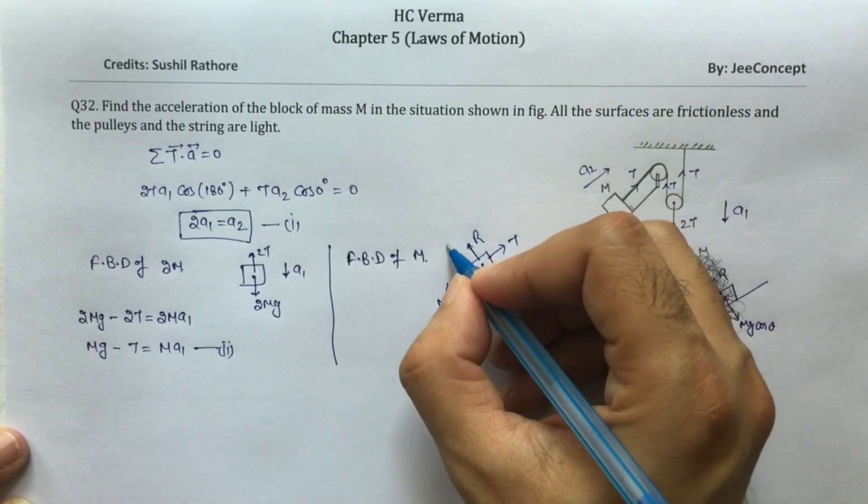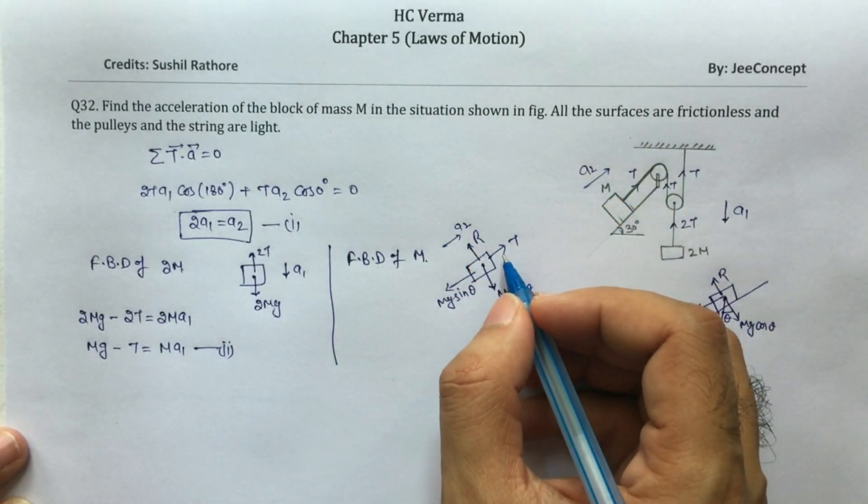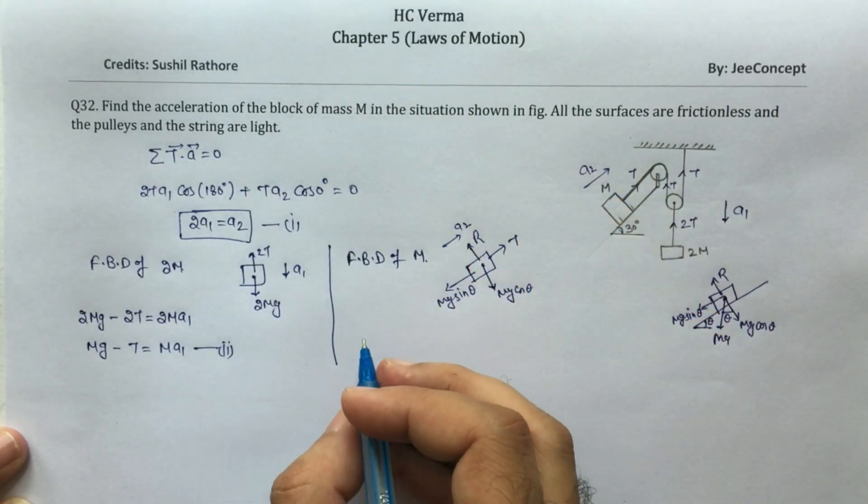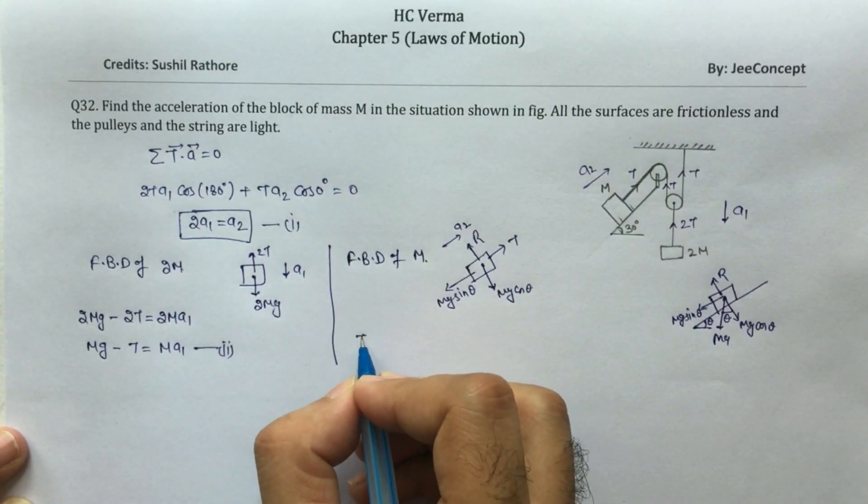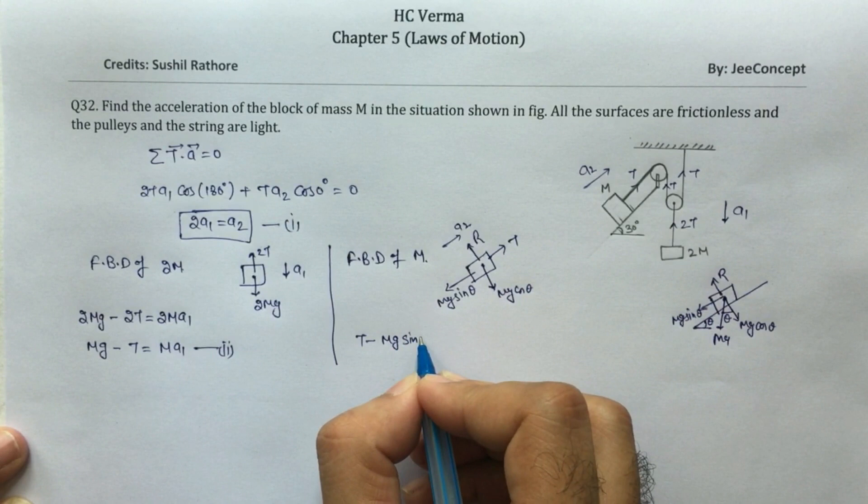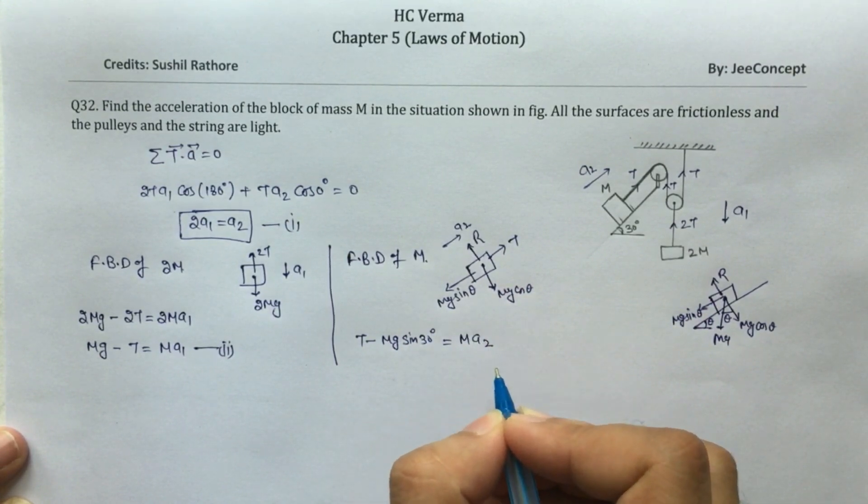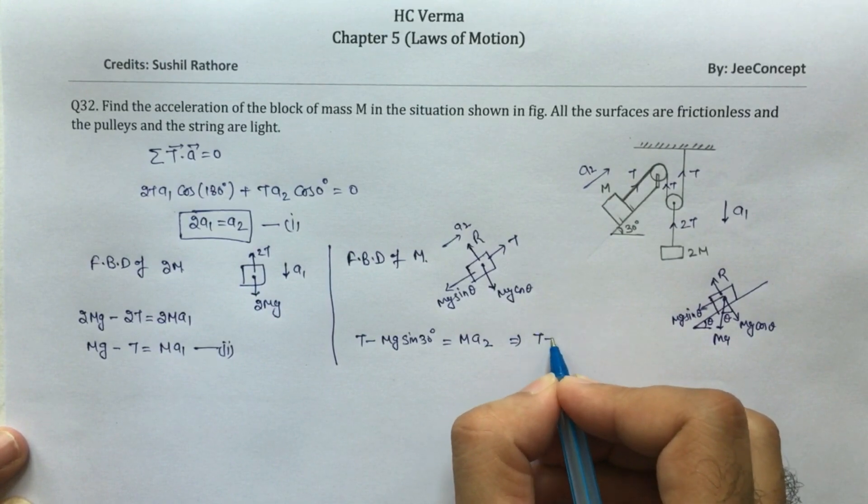And the acceleration a2 is along the tension direction T. So the equation will become T minus mg sin theta, where theta is 30 degrees, equals m times a2.